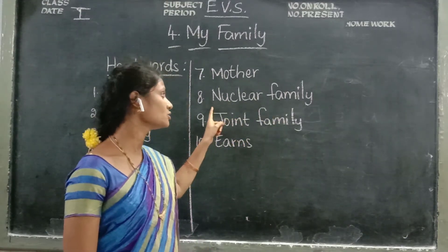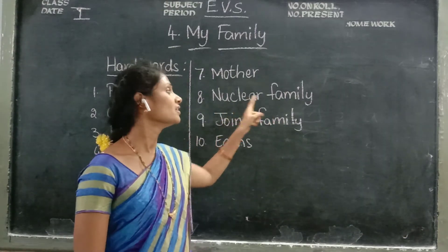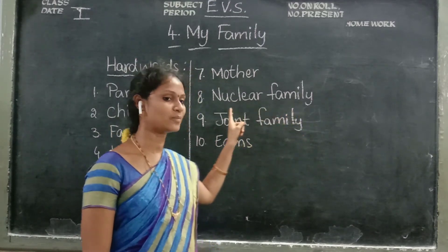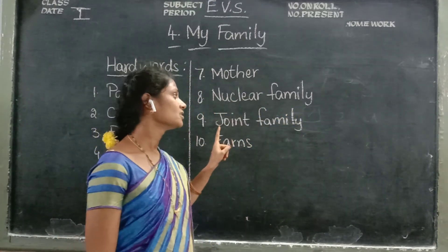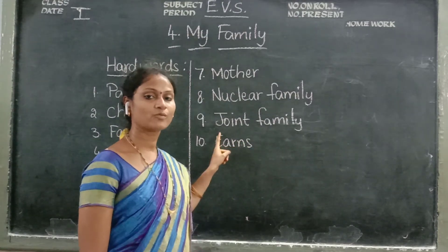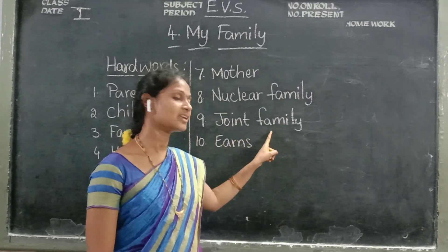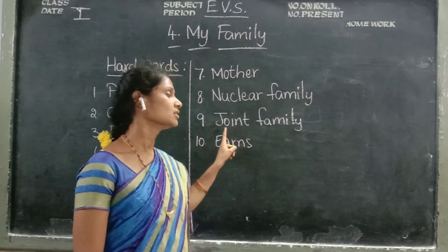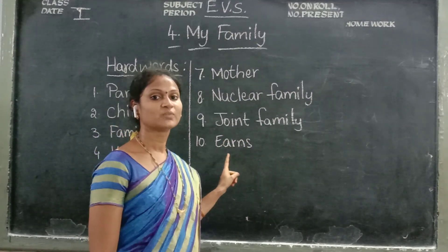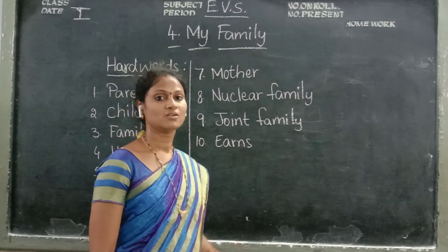N-U-C-L-E-A-R. Nuclear. F-A-M-I-L-Y. Family. Nuclear family. Ninth one: joint family. J-O-I-N-T. Joint. F-A-M-I-L-Y. Family. Joint family. Tenth one: years. E-A-R-N-S. Years.